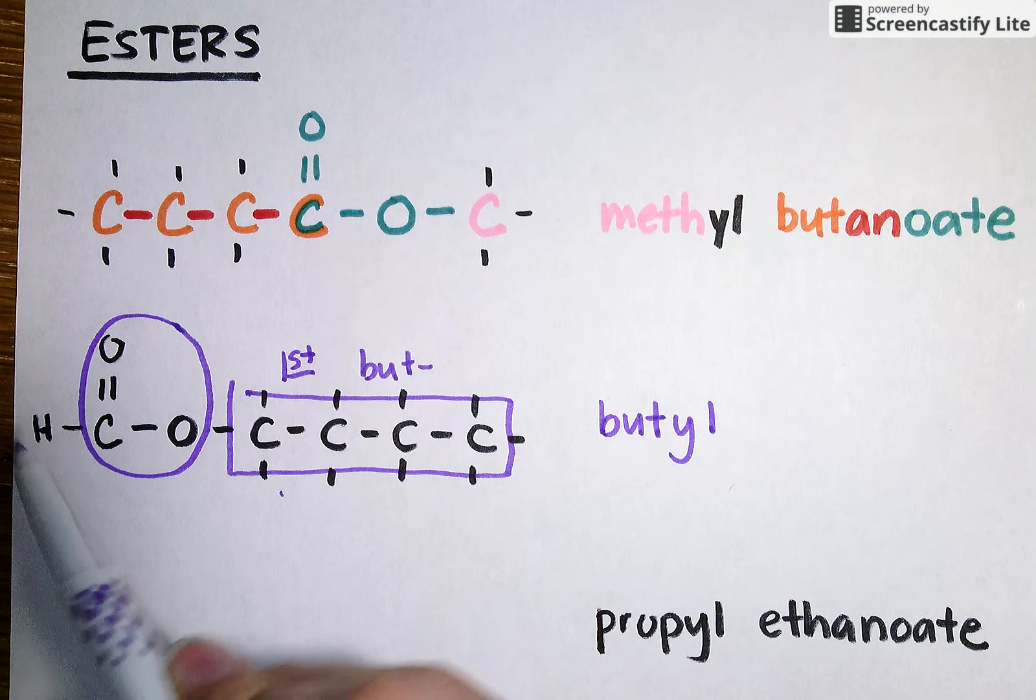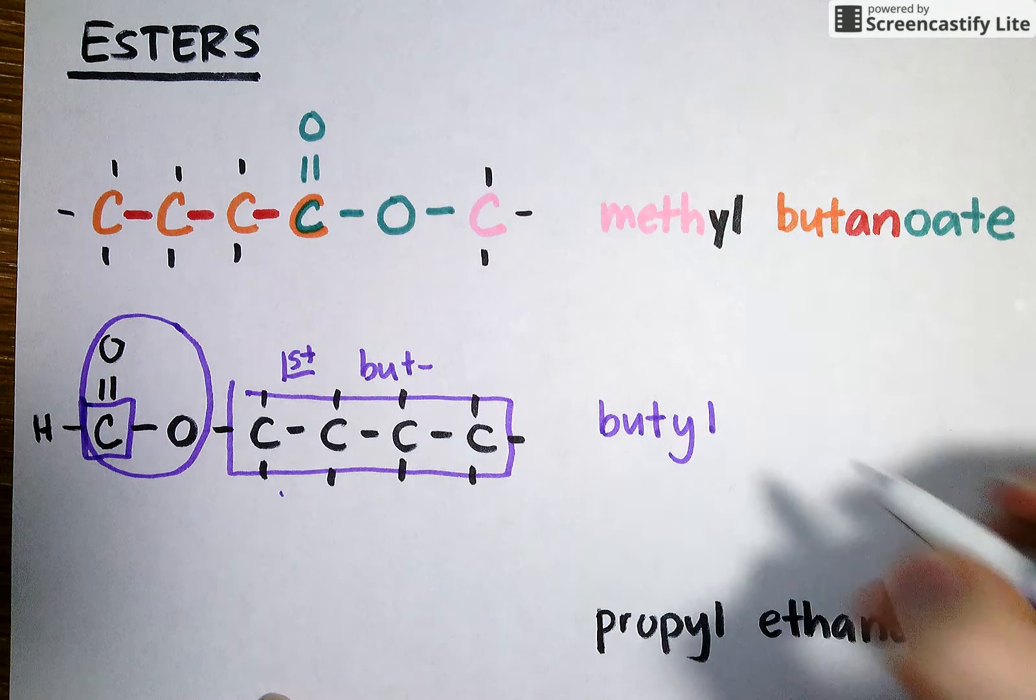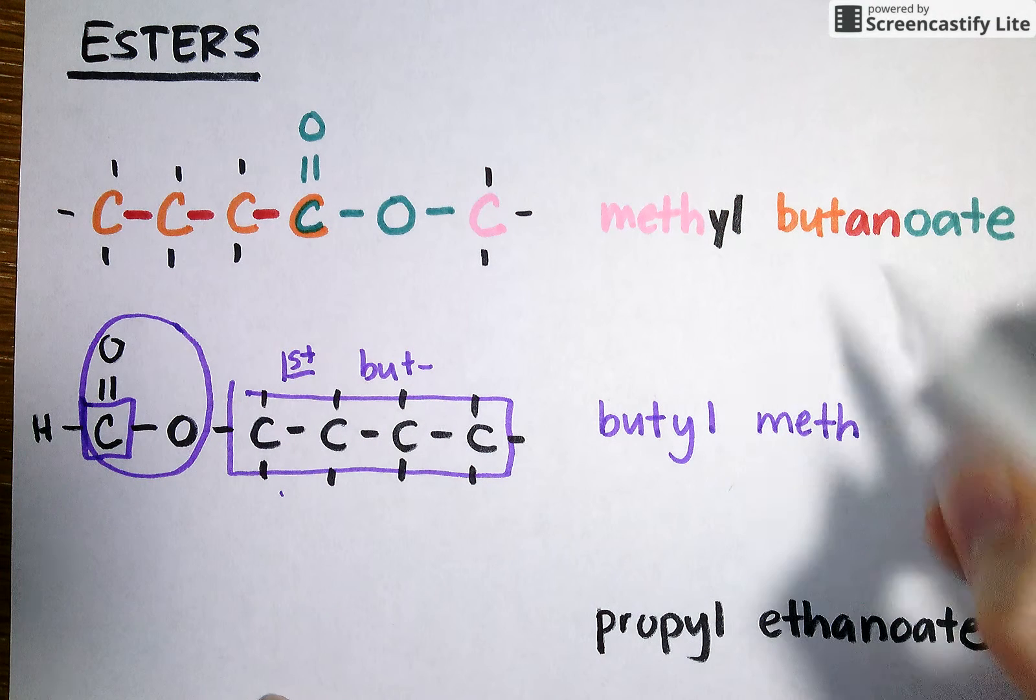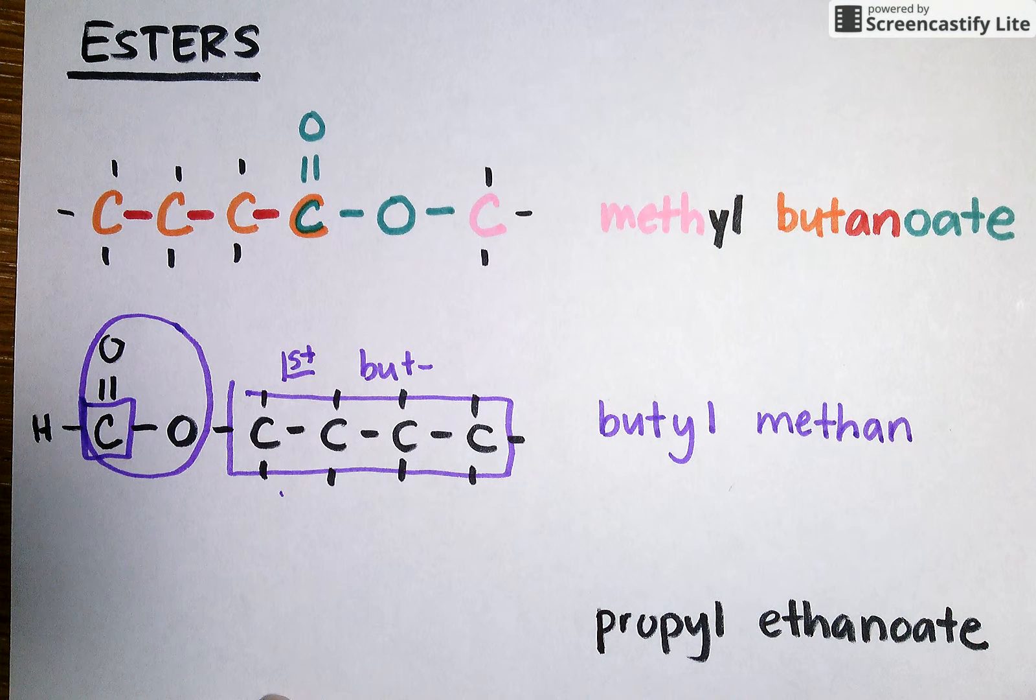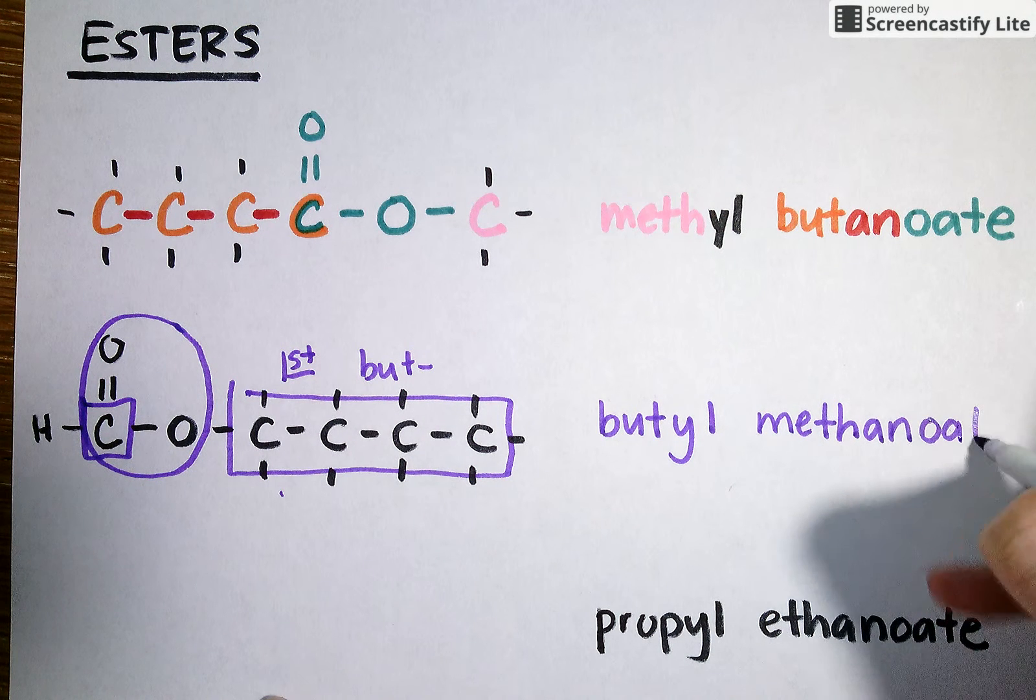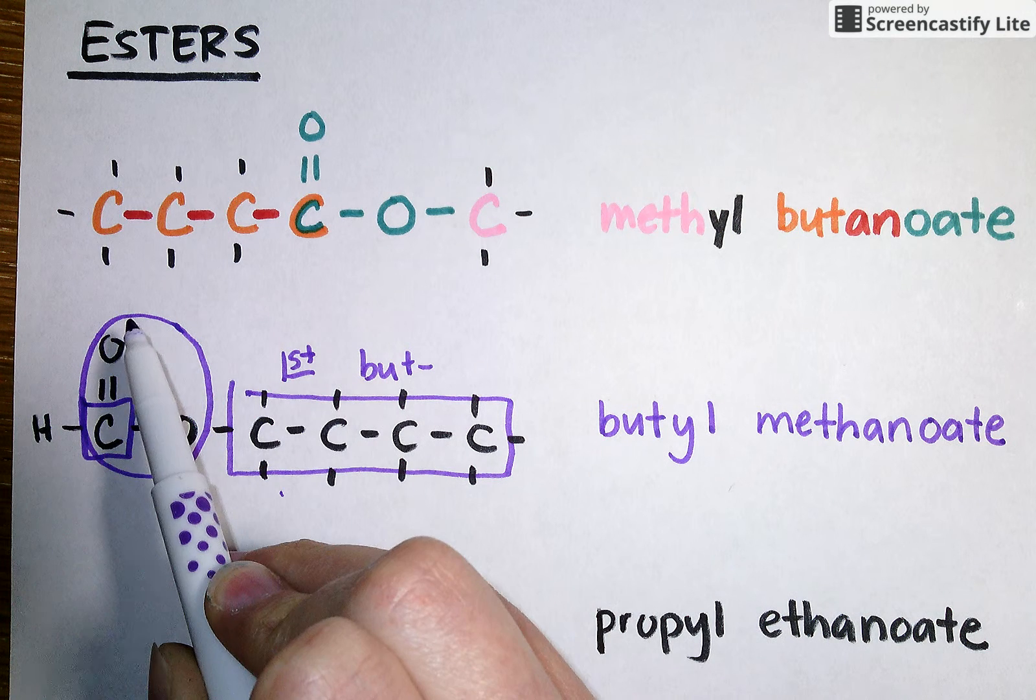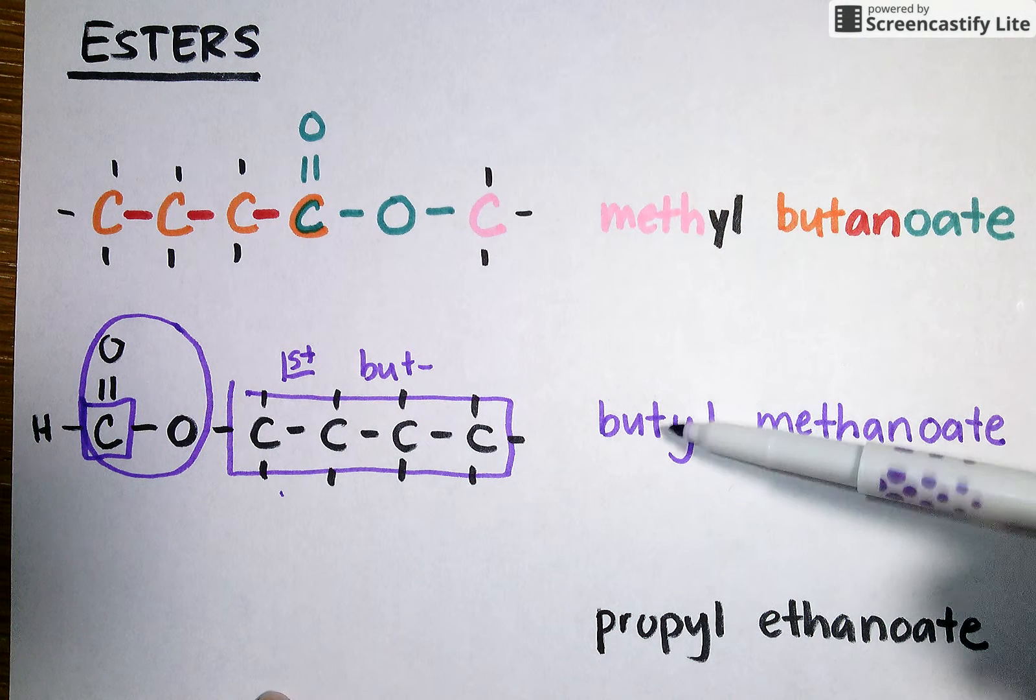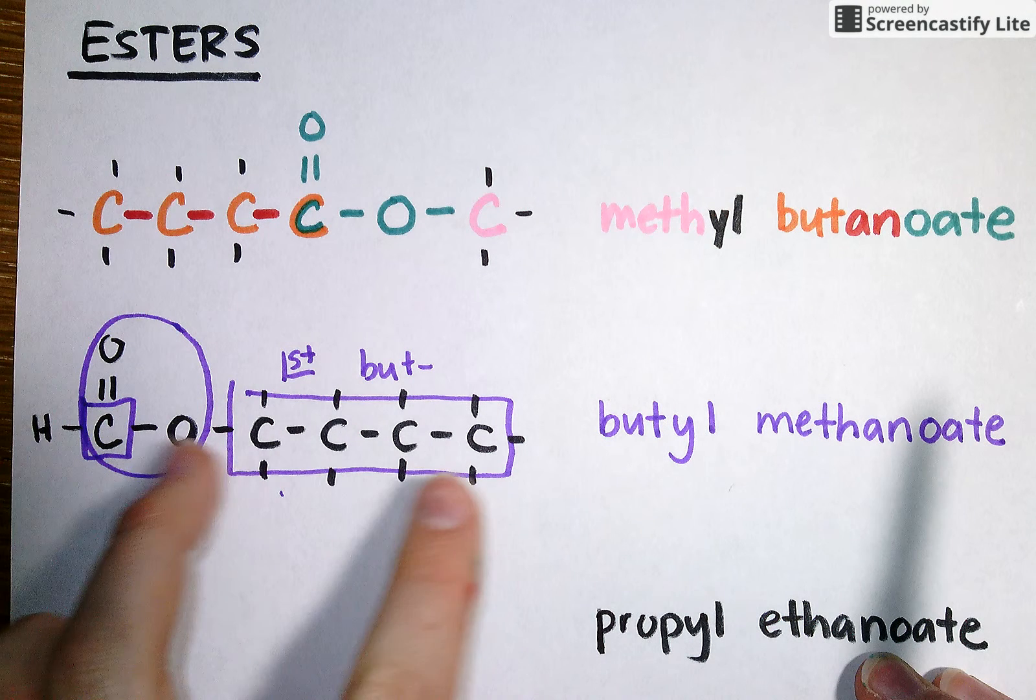Over on this side, I don't see any other carbons, so all I've got is this single carbon right here. So I'm going to use the prefix meth. I'm going to follow it by the an to show that it's nothing fancy, no double bonds between carbons because it's only got one carbon atom. And I'm going to end this name with oate to show that this molecule, because it has this functional group, is an ester, giving me a name of butyl methanoate.